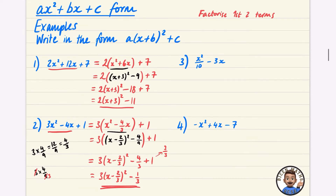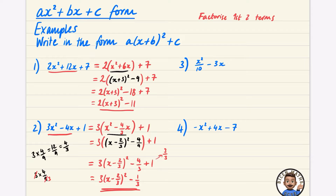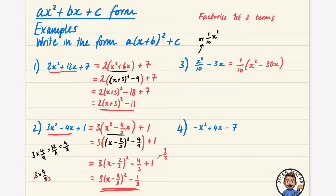Question 3 is a little different because the coefficient of x² is 1/10. This can be written as x²/10 or as (1/10)x² — they're completely equivalent. When we factorise, we're taking out a factor of 1/10, and I only need to factorise these two terms. When you take a 1/10 out, you're dividing by 1/10, which is the same as multiplying by 10. So rather than 3/10, multiplying by 10 gives −30x. We can double check: (1/10)x² and (1/10) of 30x is indeed 3x, so that works.